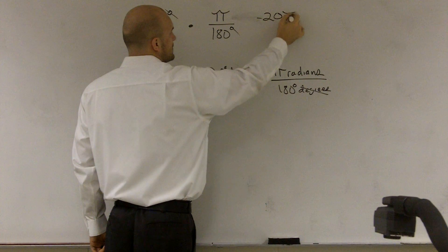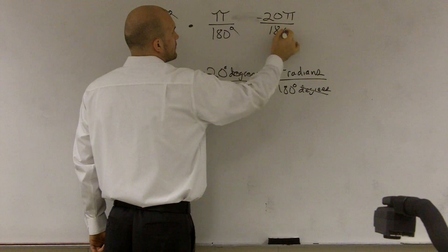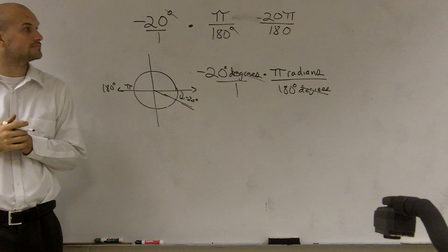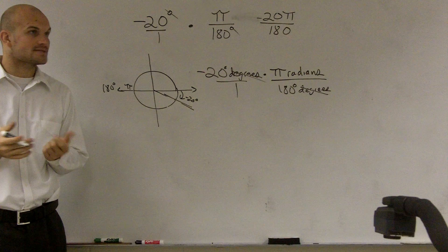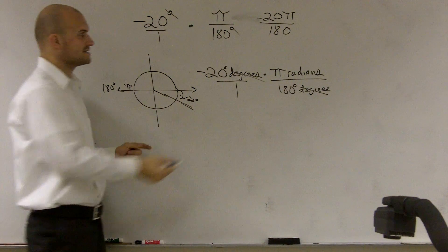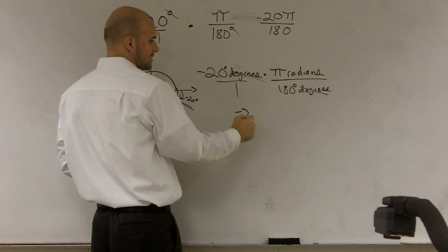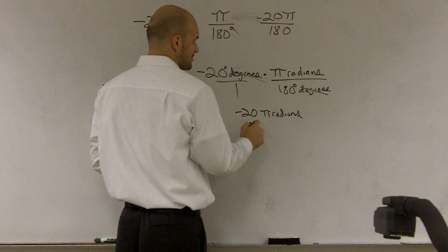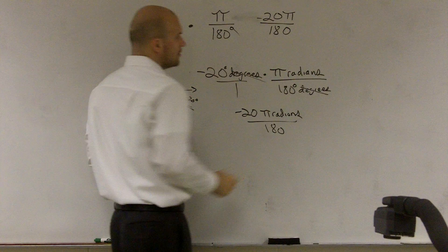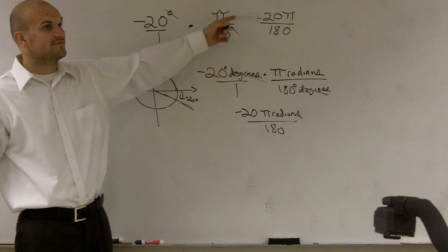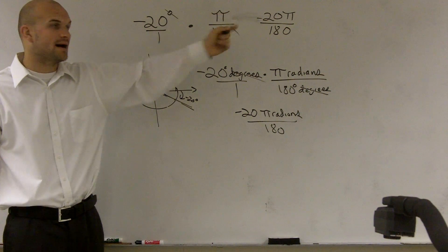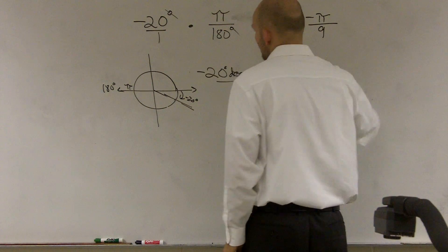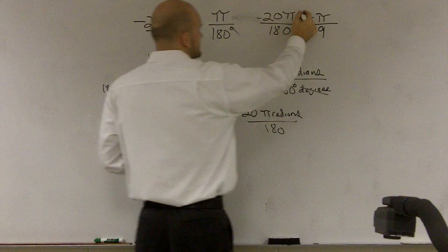So I'm left with negative 20 pi over 180. Is that enough to answer? Yes, it is my answer — the radians unit is still left, which we don't really write because we all know that's what pi is in terms of. Now I need to simplify this. I can divide 20 into the top and bottom, and you get negative pi over 9. So that would be your final answer.